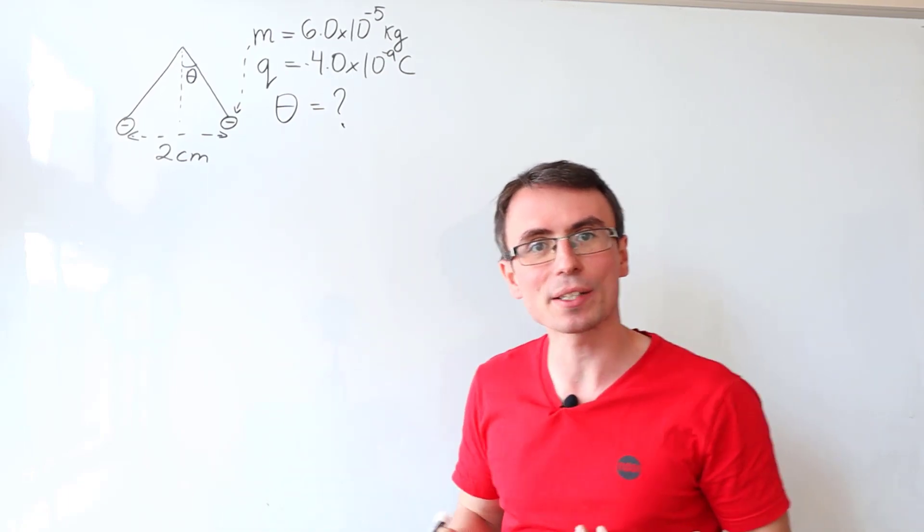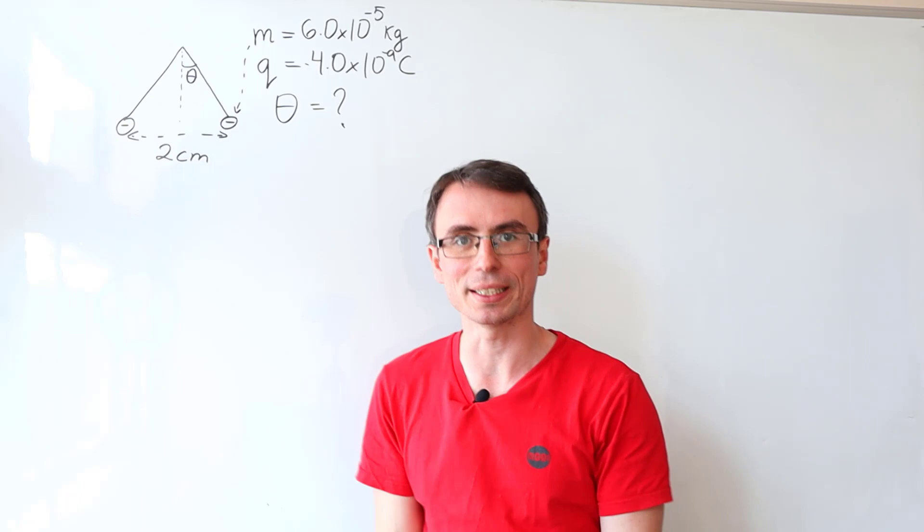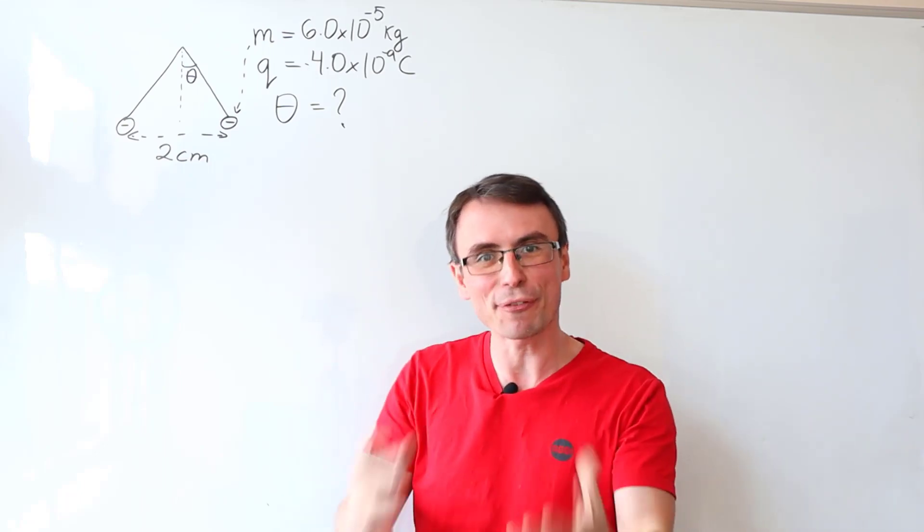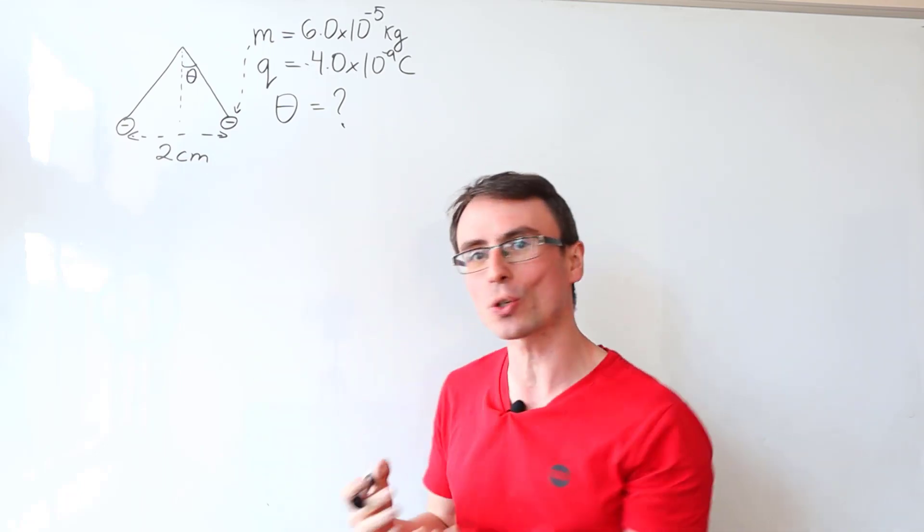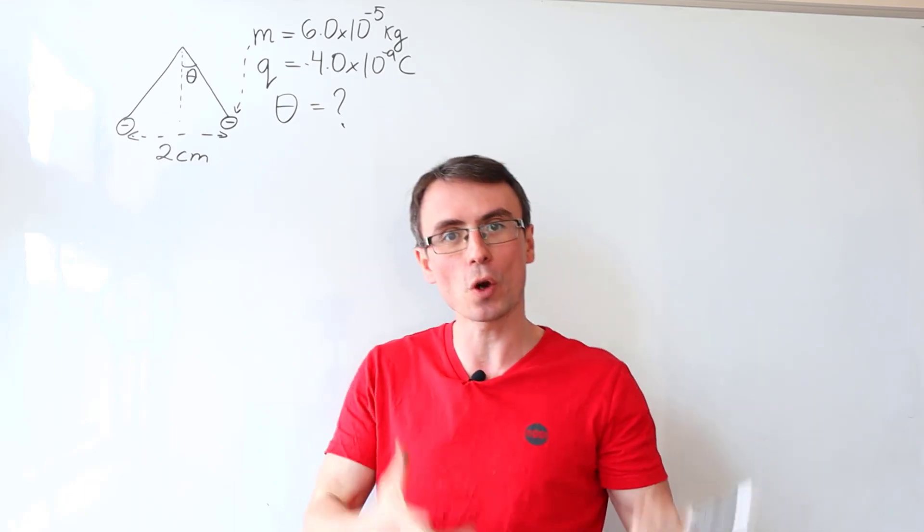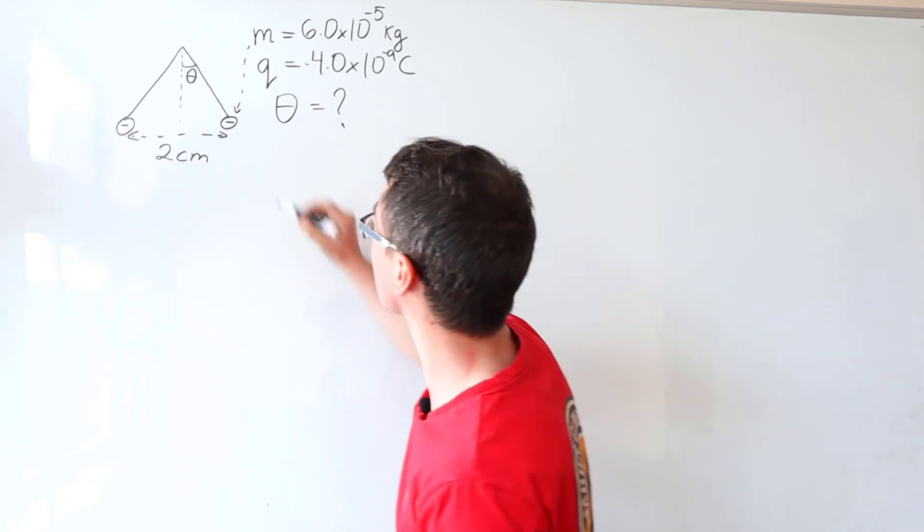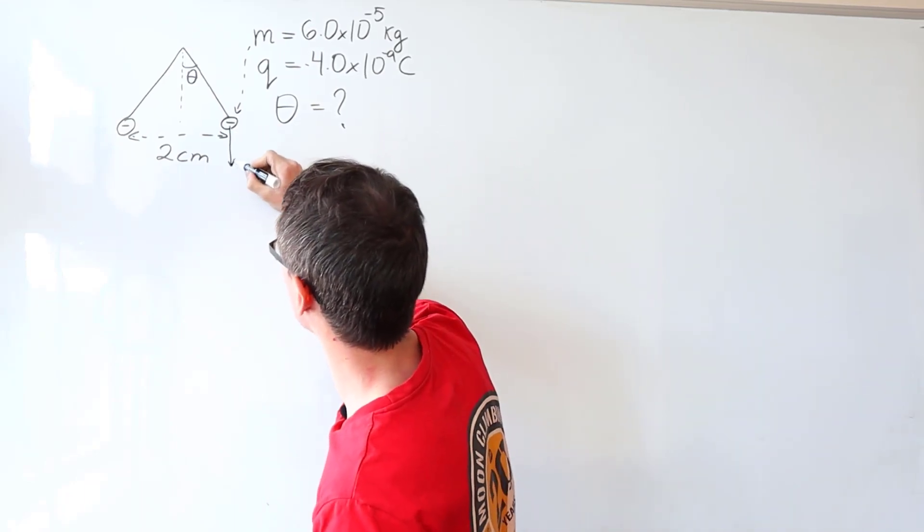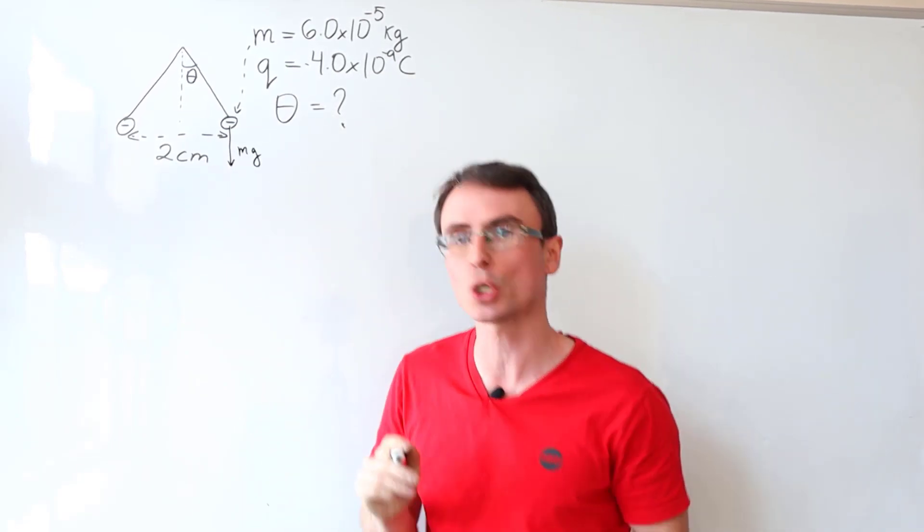What is actually happening in this problem? How are the forces balanced? First of all, there's going to be three forces that are acting on each individual sphere. We are going to have its weight that's going to be pointing straight downwards and we're going to call this one mg.